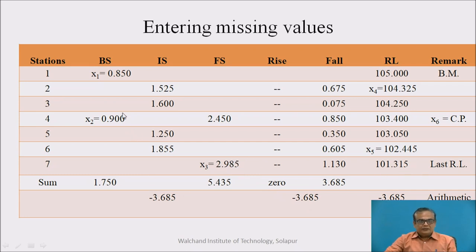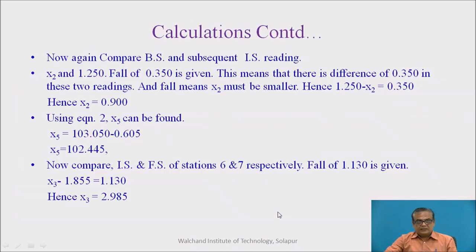Now, take the summation of all, sigma backside, sigma foresight, then summation of rise minus summation of fall, and last RL minus first RL. This is the arithmetic check, we know, in case of rise and fall, check whether it is matching. These values are given to us in the table. Now, these are the calculations.